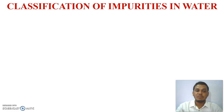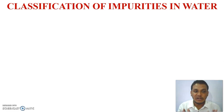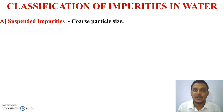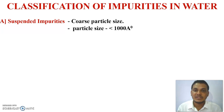The next important point is the classification of impurities. Impurities present in water samples are classified into four different types. Number one is suspended impurity, which contains clay, mud, and organic and inorganic waste. The particle size of suspended impurities is more than 1000 angstroms. Suspended impurities cause turbidity and odor.